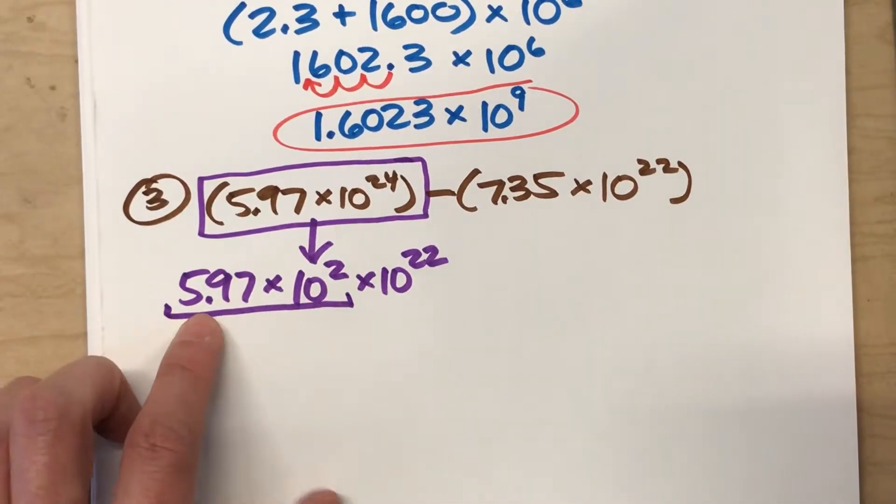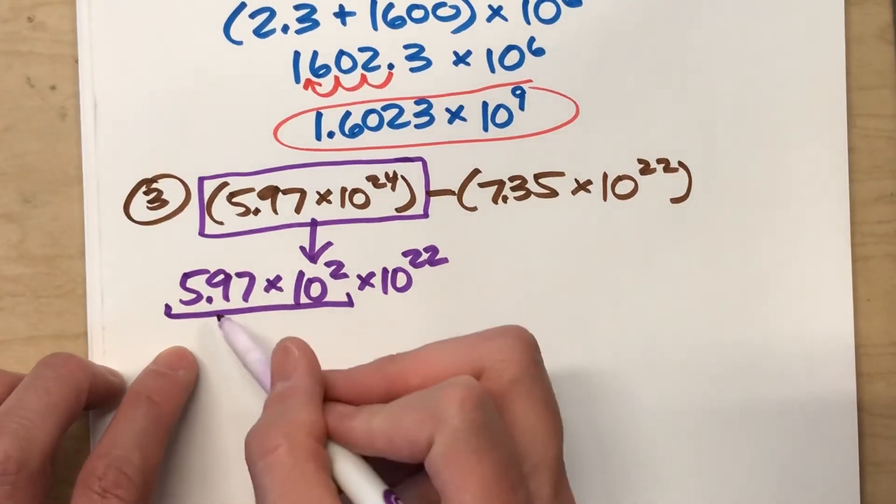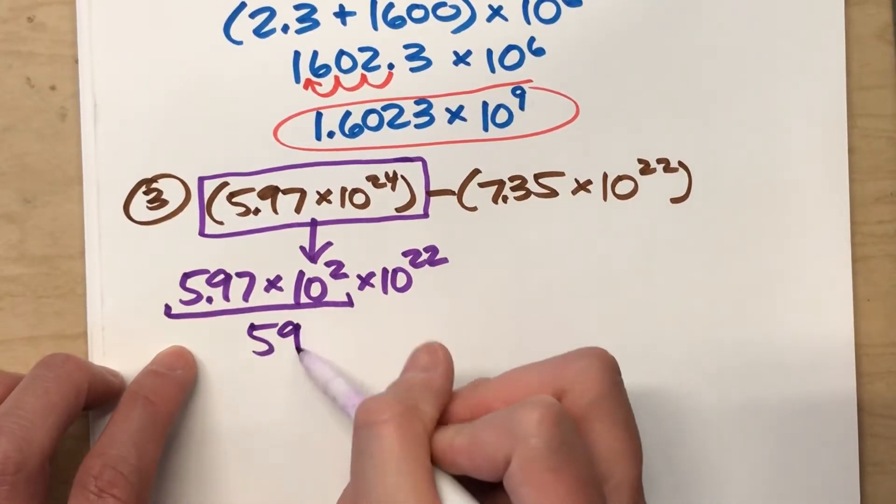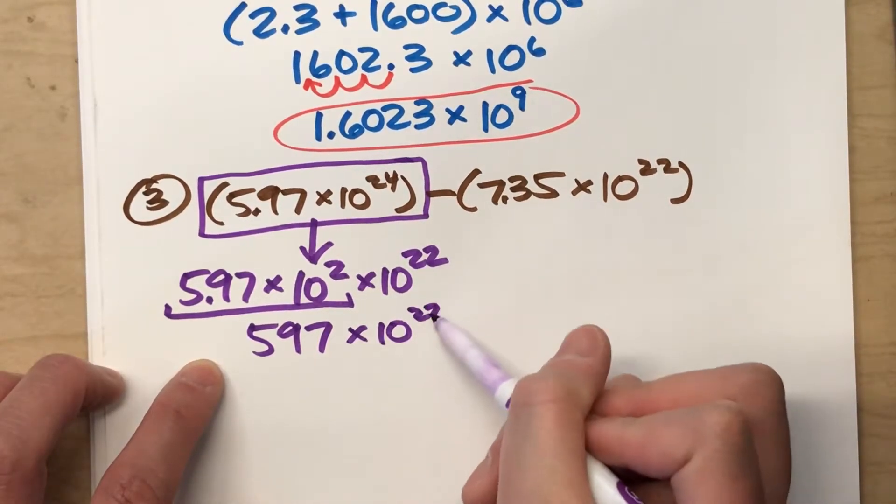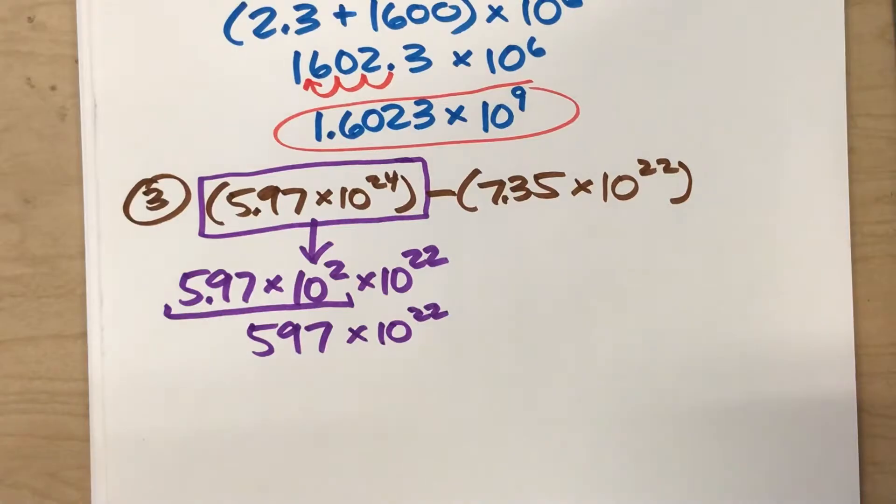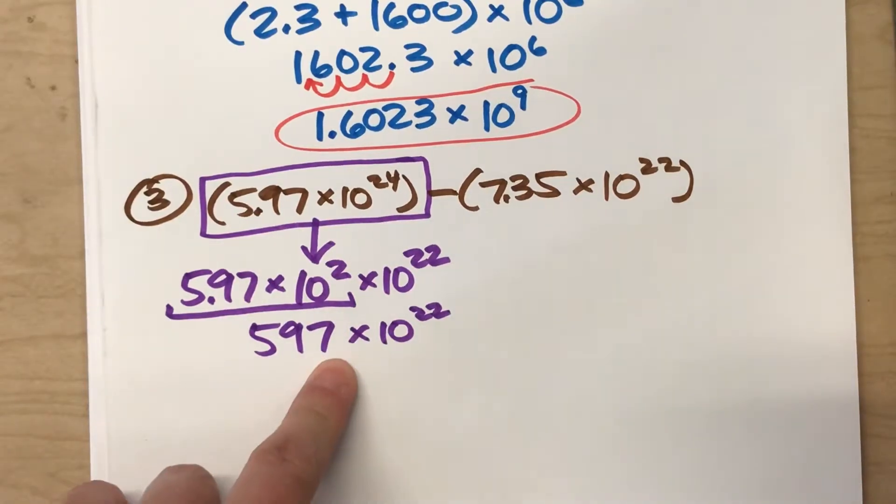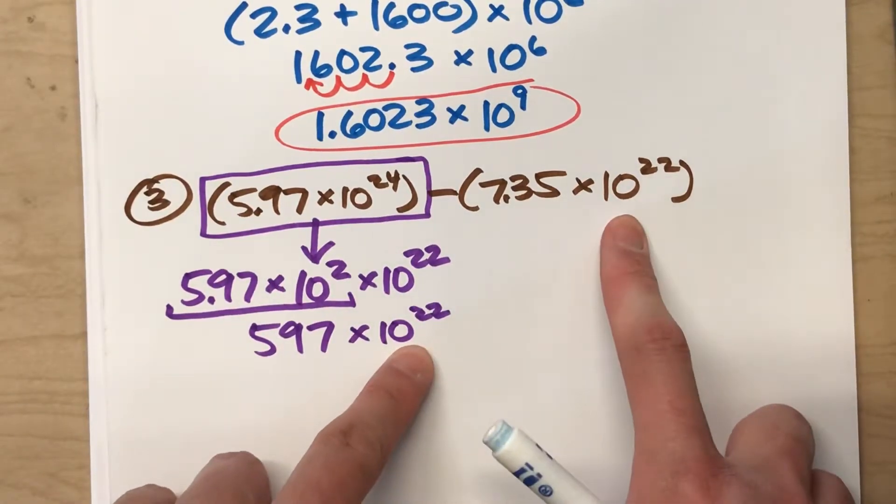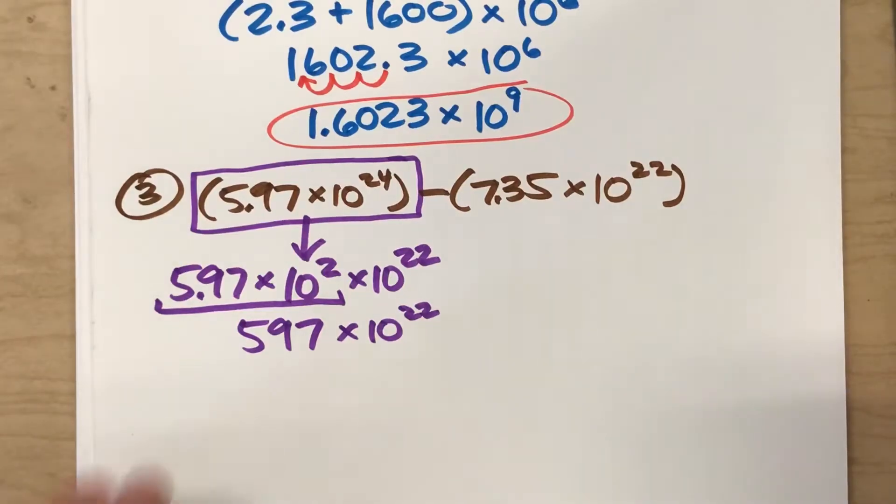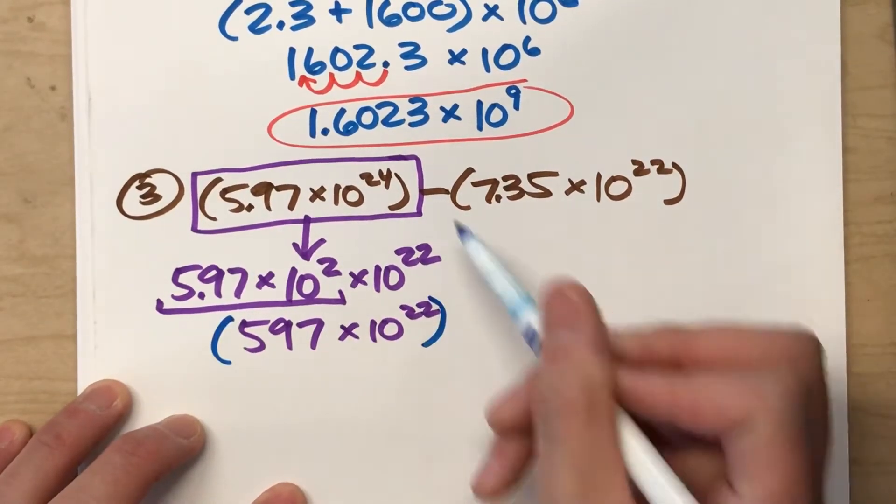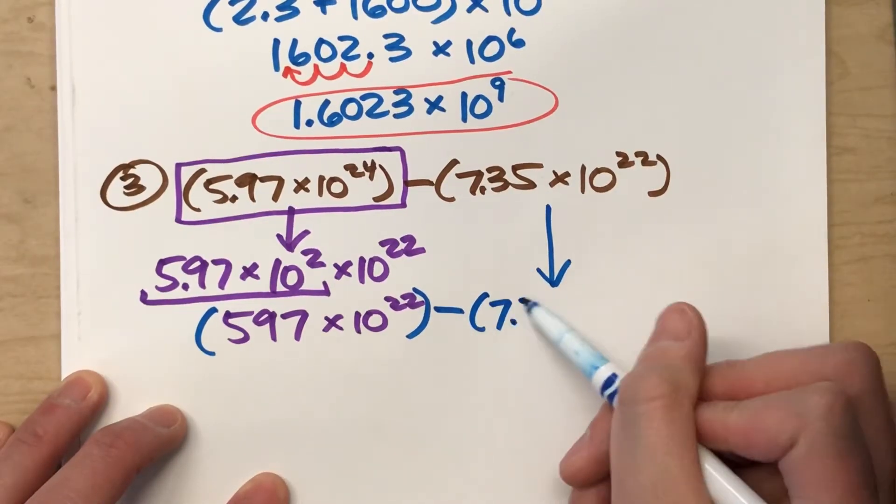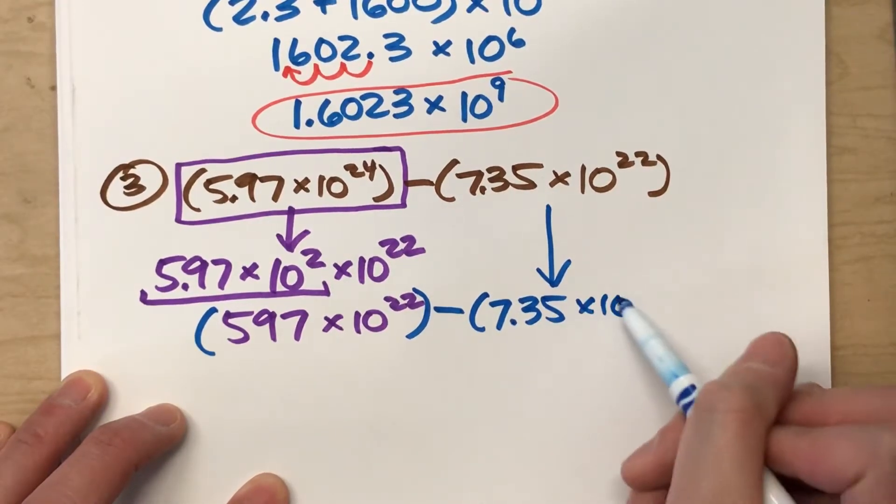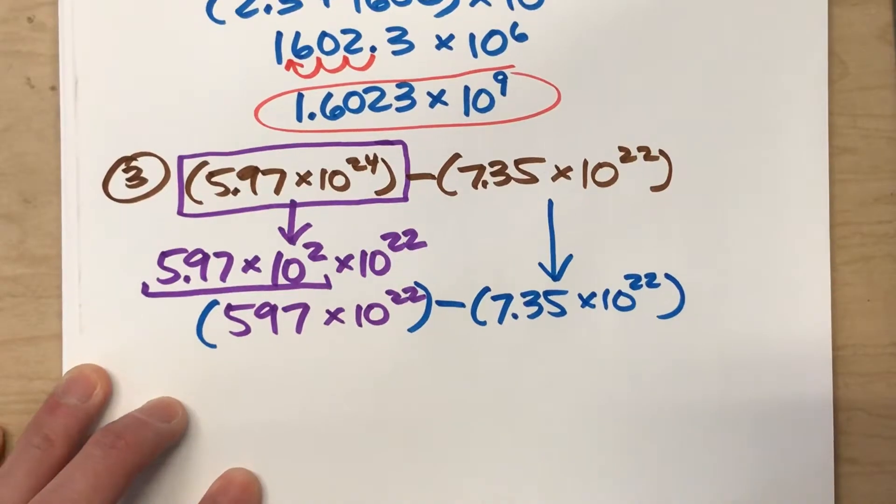So let's simplify this a little bit. I know 5.97 times 10 to the 2nd power means I move the decimal over two spots to make this just 597. And we've still got times 10 to the 22nd power. And now I've got a number that has the same power of 10 as the other one. So now I can actually do the subtraction problem here.